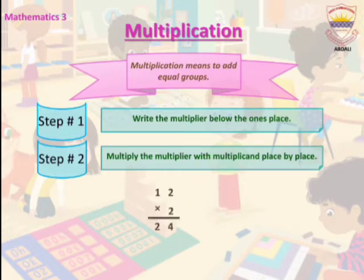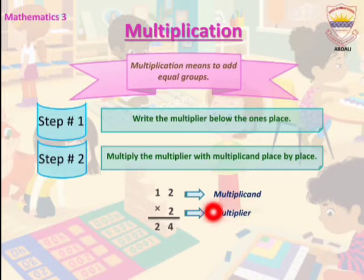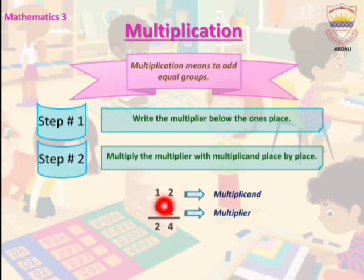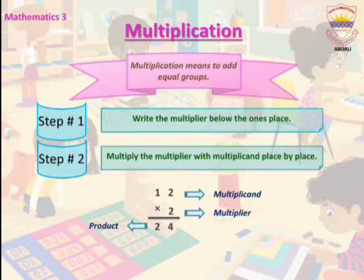Here, 12 is the multiplicand and 2 is the multiplier. When we multiply 2 by 12, we get our product, which is 24.